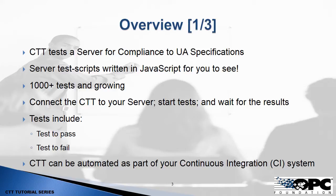The tests conducted include tests to pass, where we're looking for a very specific behavior and it matches our expectations. Likewise, with tests to fail, we can set up situations where the requests are invalid or where the intended behavior doesn't make sense, and we can observe the server's response to make sure it abides by the specifications. CTT server testing can also be automated as part of your CI system, and we do have another video that describes how to accomplish this.